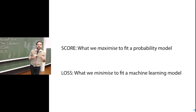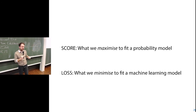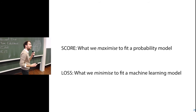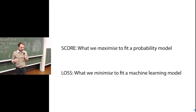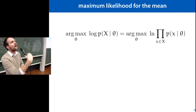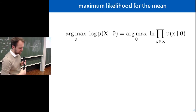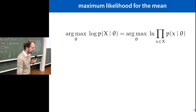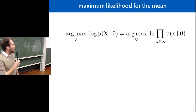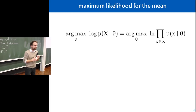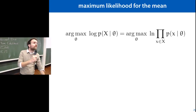The log-likelihood is what we maximize to fit a probability distribution to data, analogous to the loss function we minimize in supervised learning. The score — the derivative of the log-likelihood — is also useful. We'll have a break now, about 15 minutes, and then look at applying maximum likelihood to find the mean of a normal distribution given some data. We'll restart at ten.